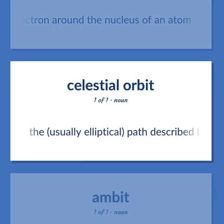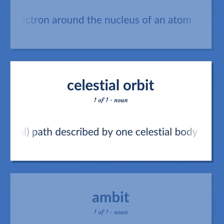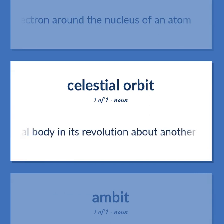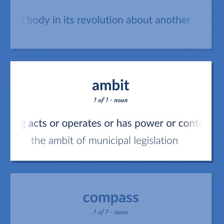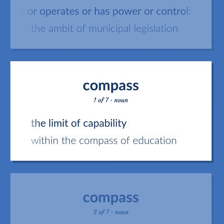Compass: The usually elliptical path described by one celestial body in its revolution about another. An area in which something acts or operates or has power or control — the ambit of municipal legislation. The limit of capability — within the compass of education.